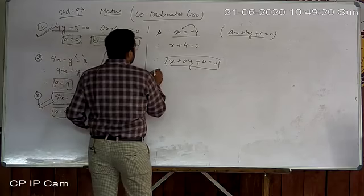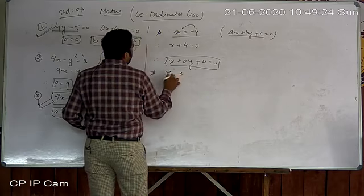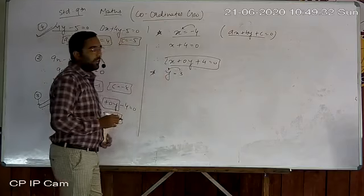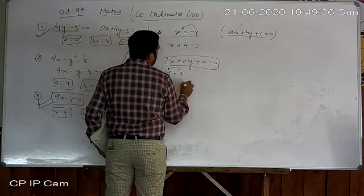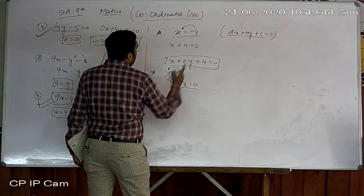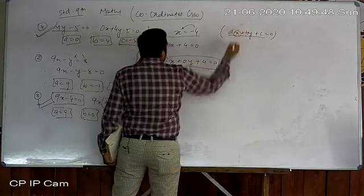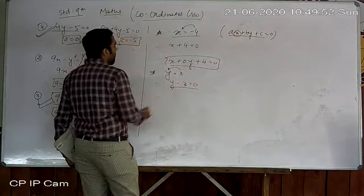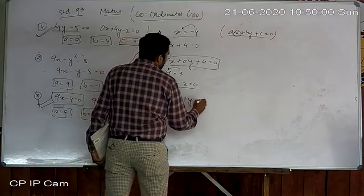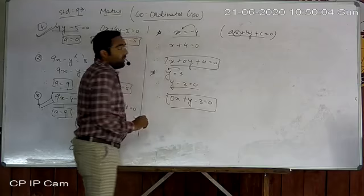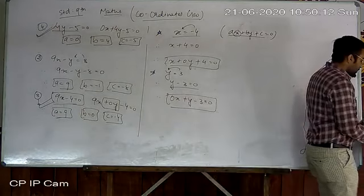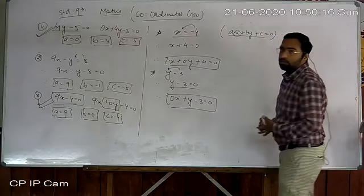Next: y = 3. Shifting 3 to the other side gives y − 3 = 0. As per the standard formation, there is no variable x available, so I write it as 0x + y − 3 = 0. Every time, if x or y is not available, you can put 0x or 0y.